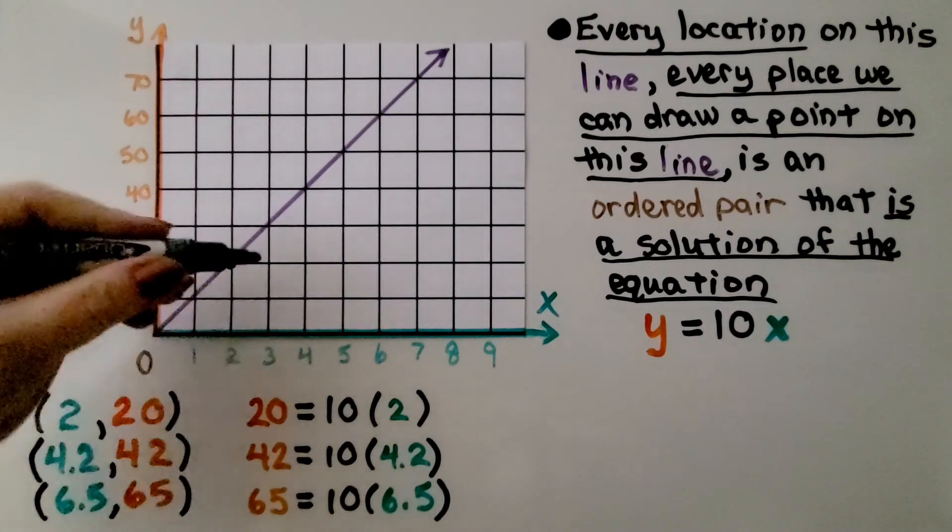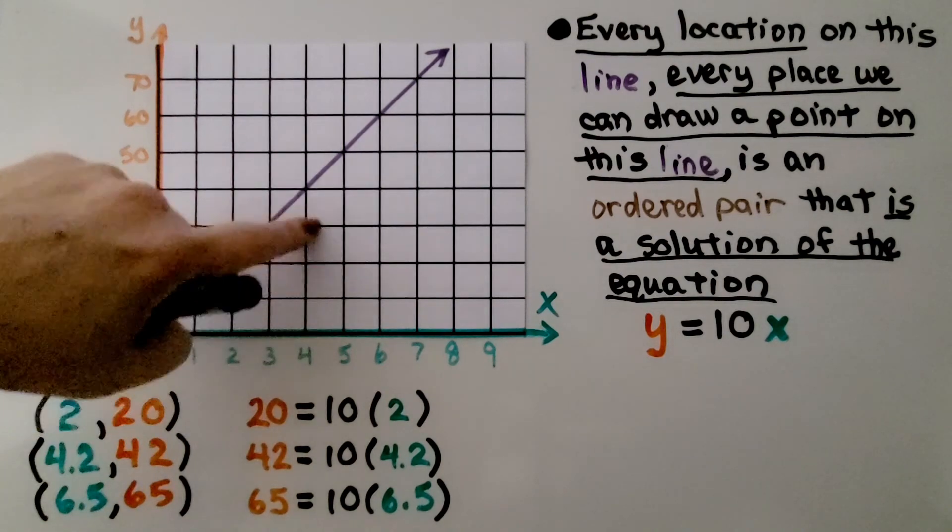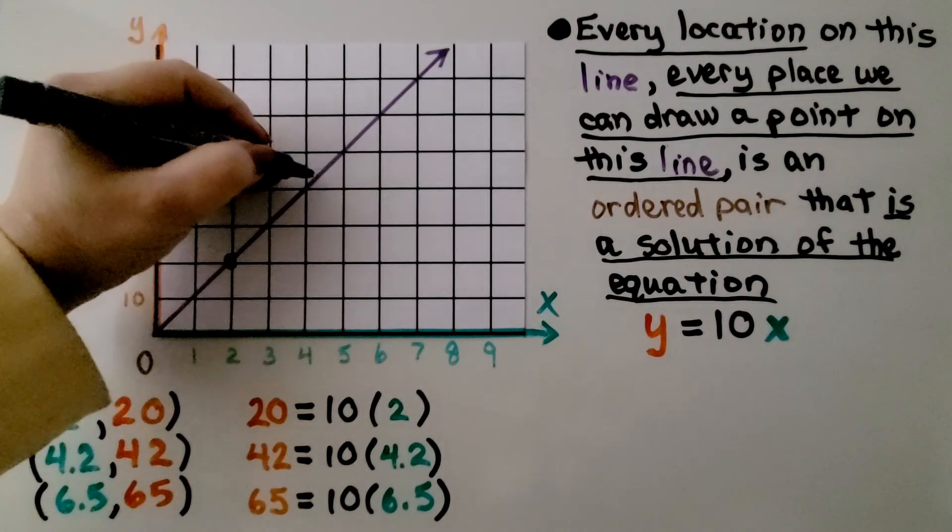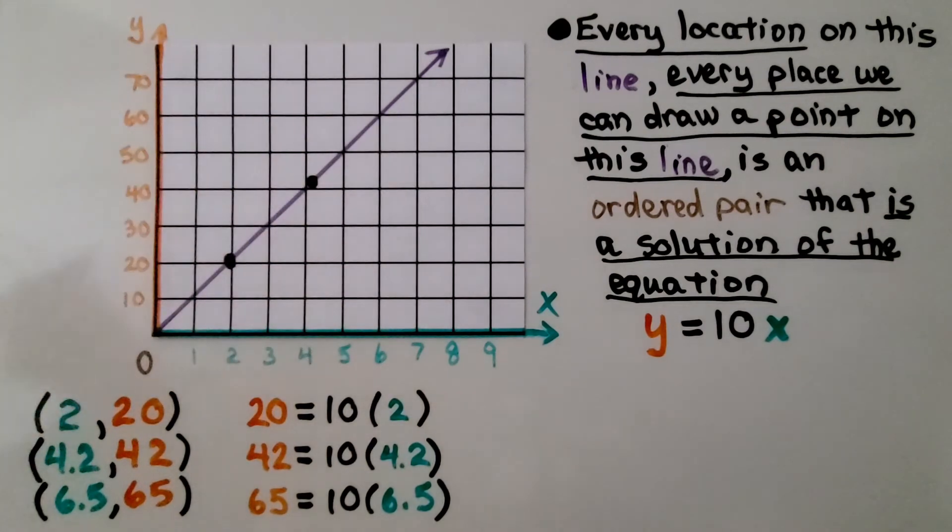What about 4 and 2 tenths and 42? Well, 4 and 2 tenths would be a little bit past the 4 right here, wouldn't it? And we would go up to 42 and it would be about right here. And that's on the line. That's a solution to the equation.